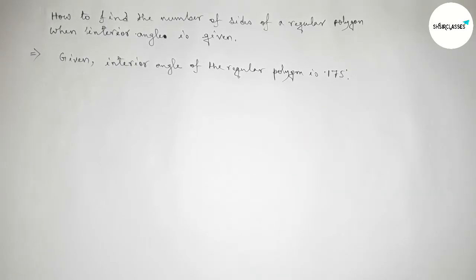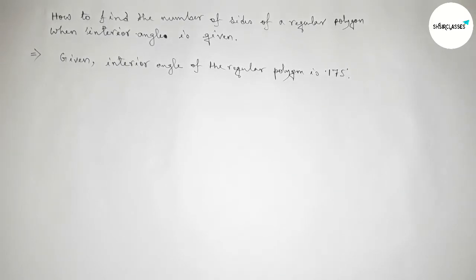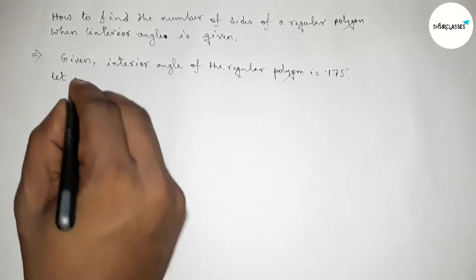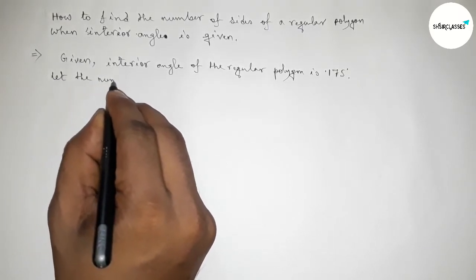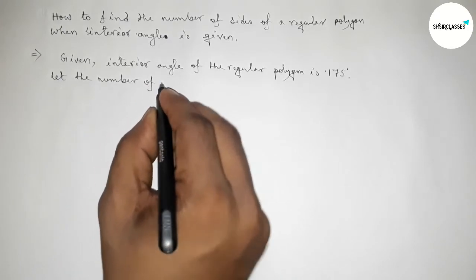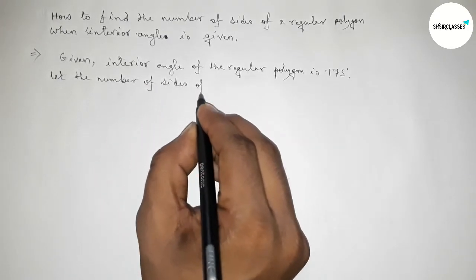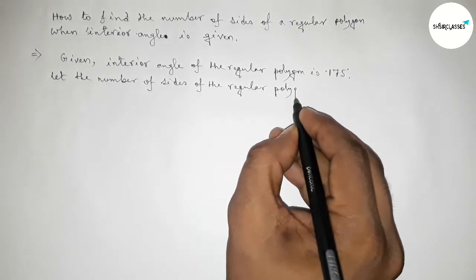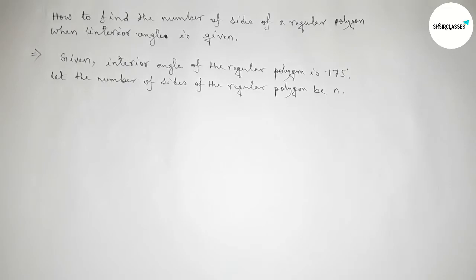Next, let the number of sides of the regular polygon be n. So first of all, let us assume the sides of the regular polygon be n.